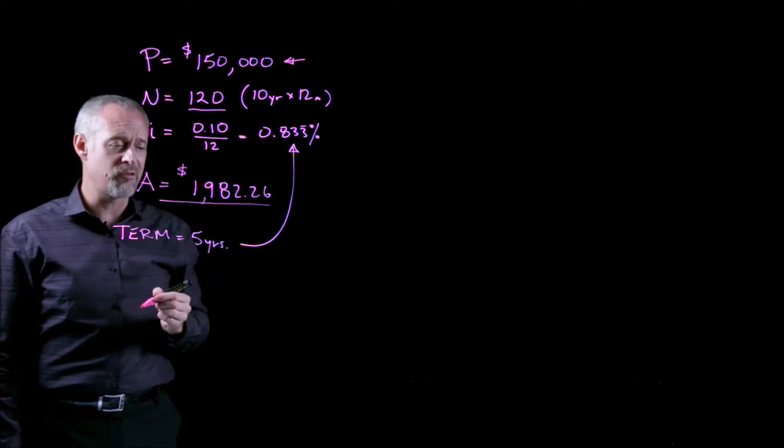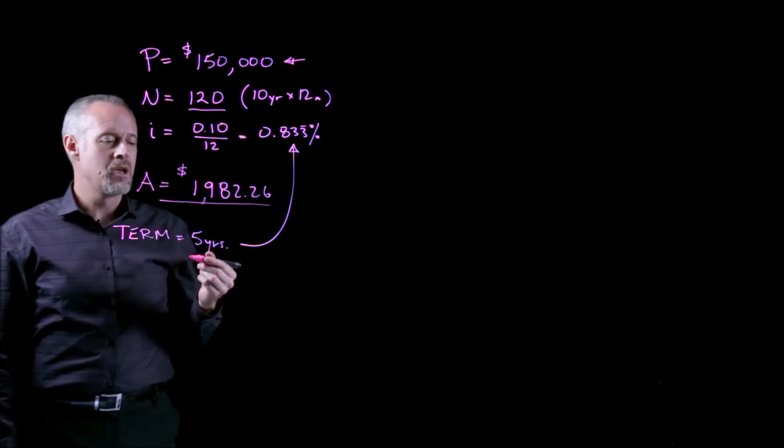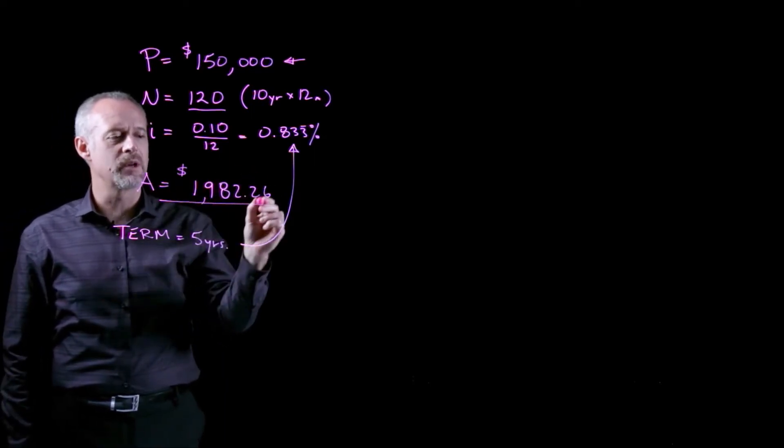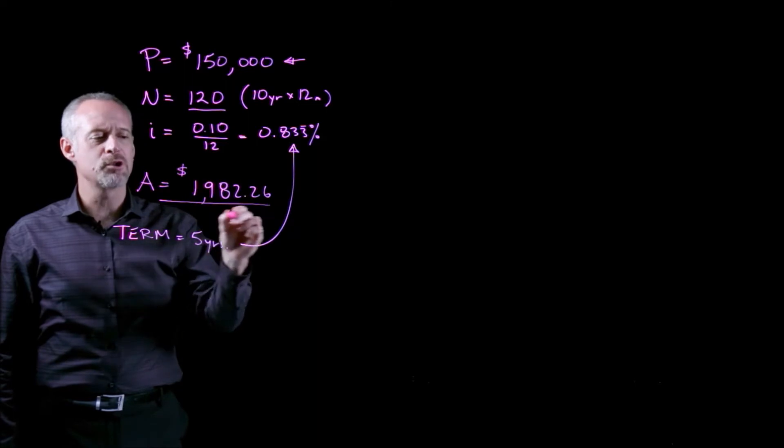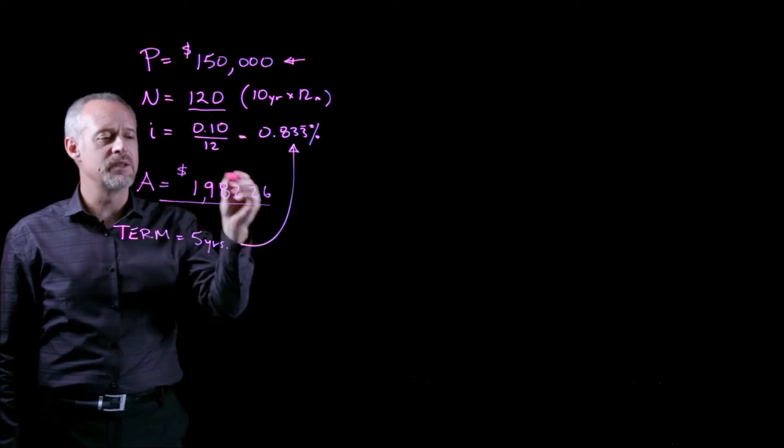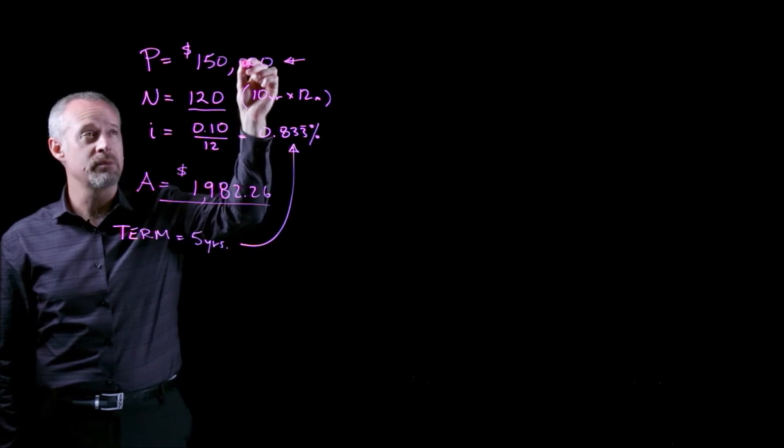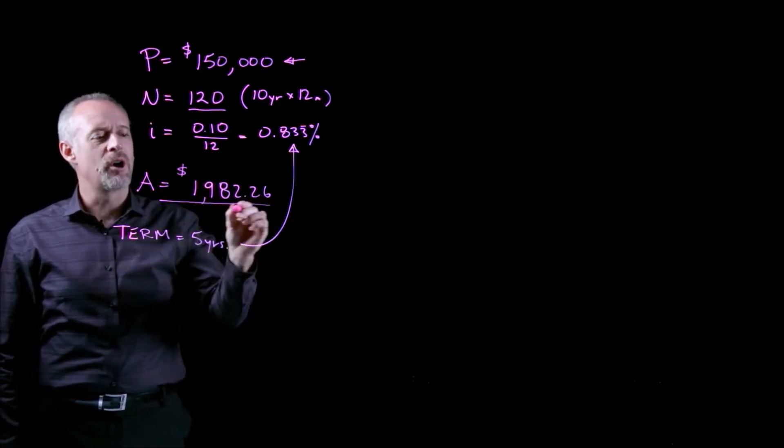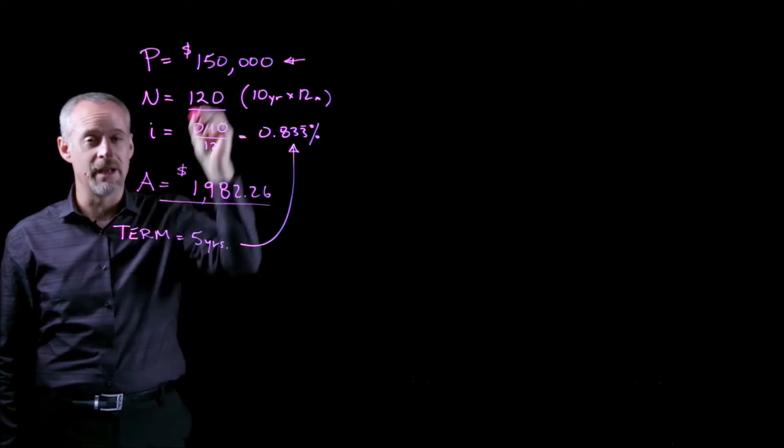We have to be very careful that we stay consistent with the concepts of the time value of money. The challenge here is that each of these payments of $1982.26, some portion is covering the accumulated interest for that month, and some portion is going down to pay down the principal amount. As we move through time, a larger percentage of the annuity payment will go towards paying down the principal of the mortgage.